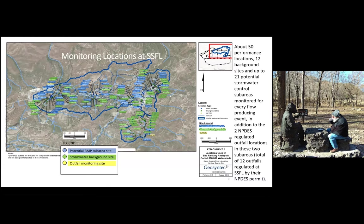This is a map showing two of our main study areas on the site. It's about 2,800 acres total; we focused on about 1,000 acres in two sub-watersheds for the distributed controls. The other sub-area watersheds were dealt with using pipe controls as they were much smaller. The blue labels correspond to potential stormwater control locations with industrial or anthropogenic activity upstream. The green locations are background sites with no known activity above those locations.